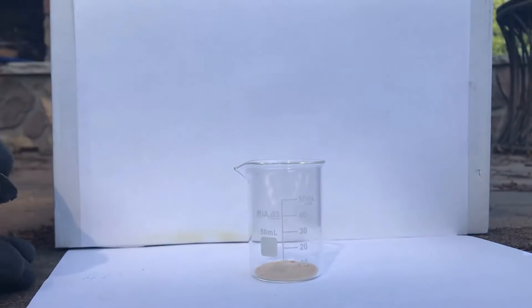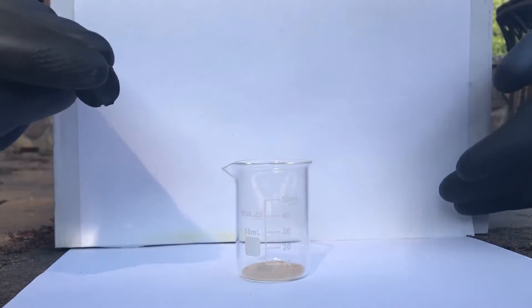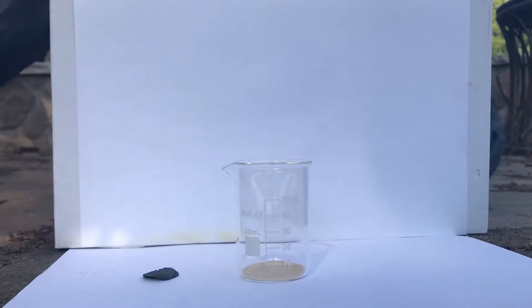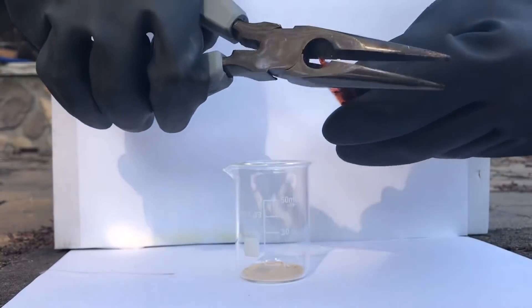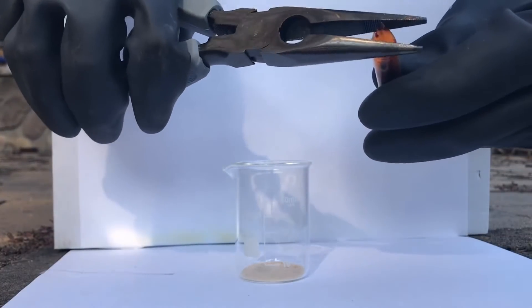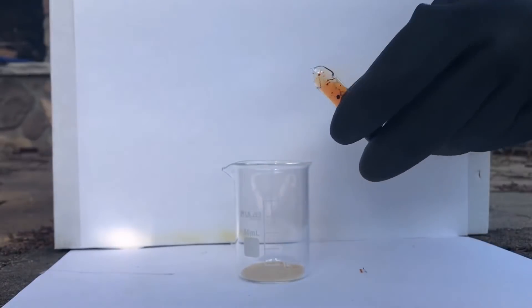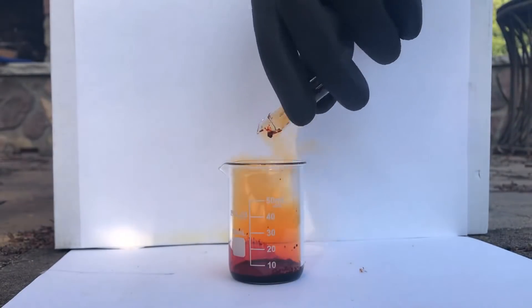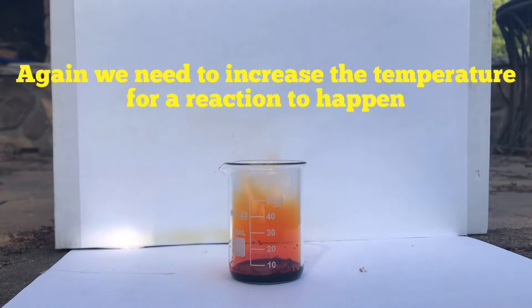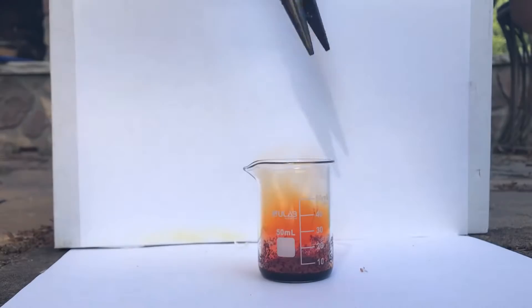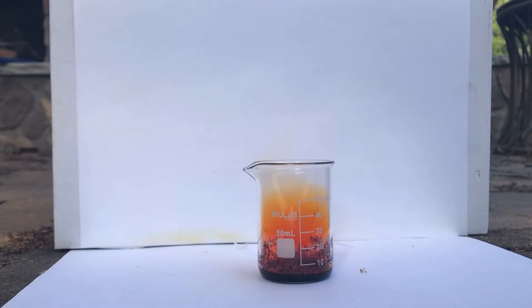Okay, so now we're going to react lithium metal, right here, with some bromine. Right here. Alright. Let's go. Obviously, the lithium did not react, so now we're going to have to light it on fire and then drop it in.